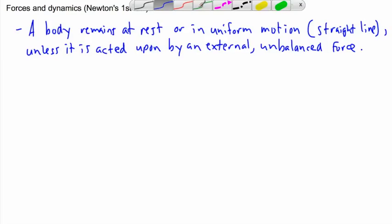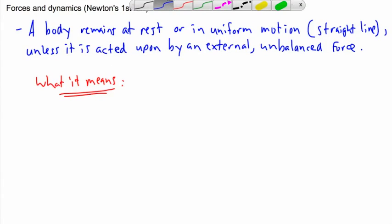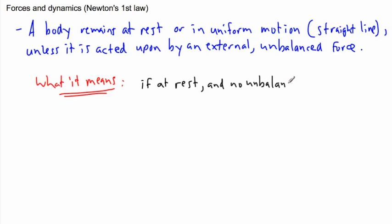So maybe we should look at what it means. So if it's at rest, let's say something is just still and there's no unbalanced force, in other words F_net is zero. We were just looking at net forces before or finding the resultant force.